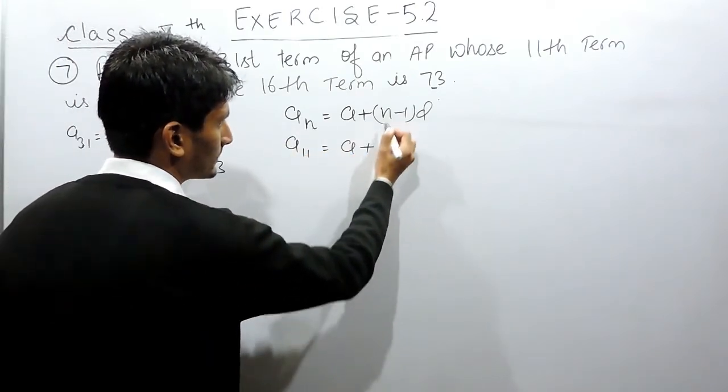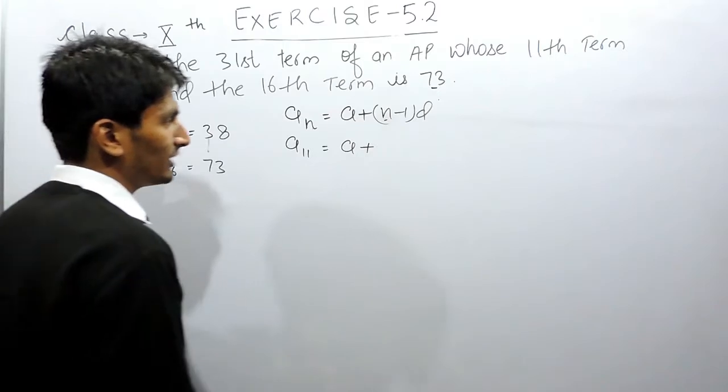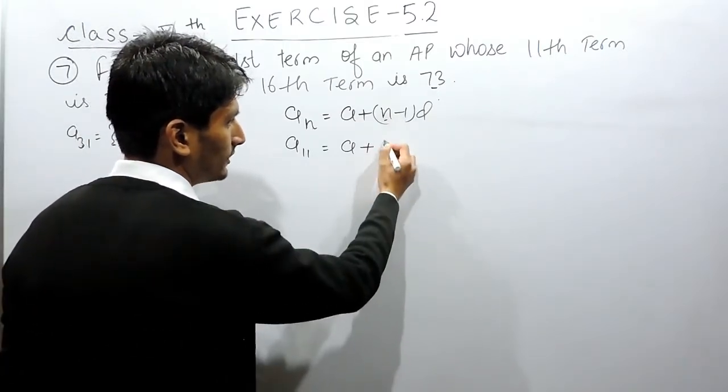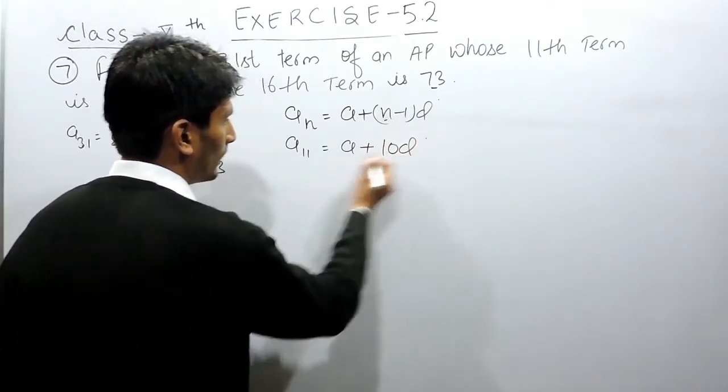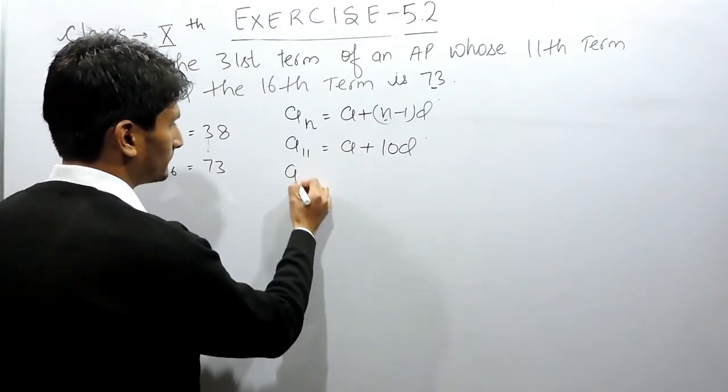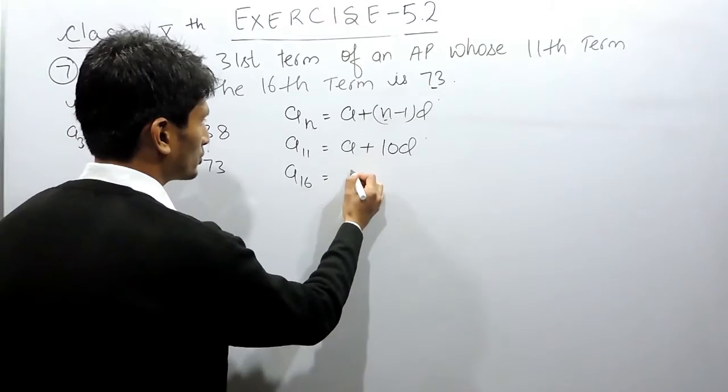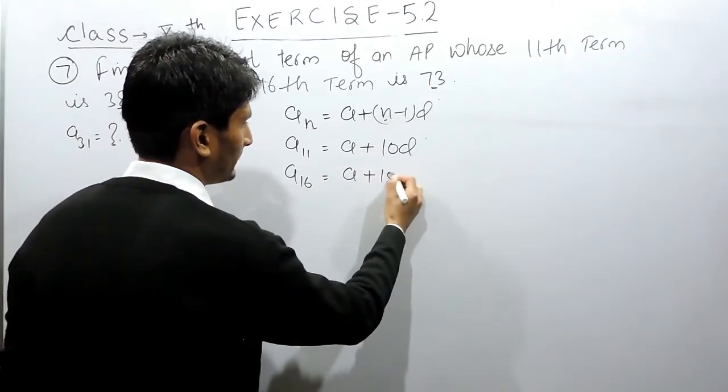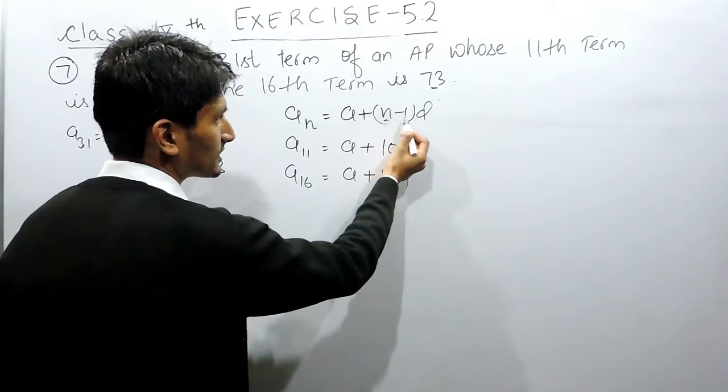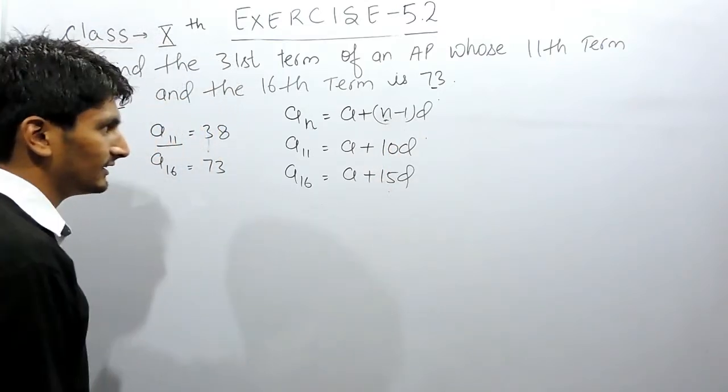So here the 11th term should be equals to a plus, the value of n here is 11, so 11 minus 1 is 10, so 10d. Our 11th term must be a plus 10d. Similarly our 16th term must be equals to a plus 15d, so in that case the value of n will become 16, or 16 minus 1 will be 15d.